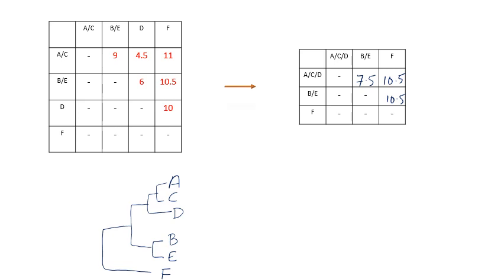Recalling the Darwin's finches example: species A is closely related to species C, and A and C together are related to D. Similarly B and E are closely related, and this group is related to ACD. F is an outlier. I hope you now understand how the UPGMA method works and how we can construct a phylogenetic tree using it. Next time we will try to understand the other algorithms and methods to construct phylogenetic trees, and by the next lecture we will finish off with the phylogenetics topic. Till then, Allah Hafiz.